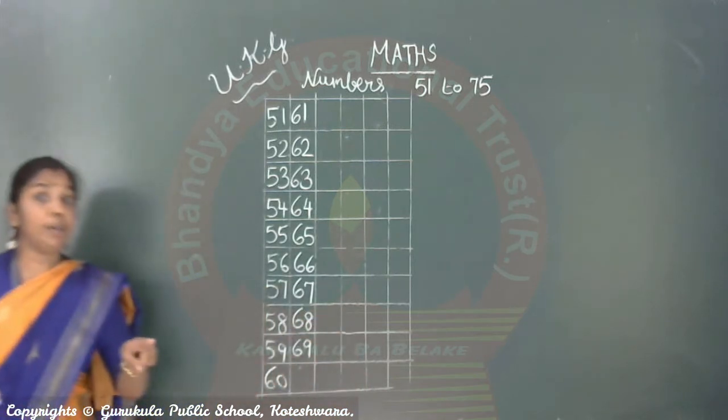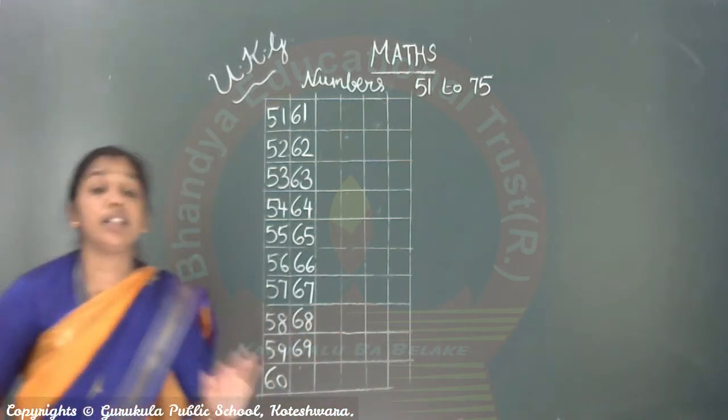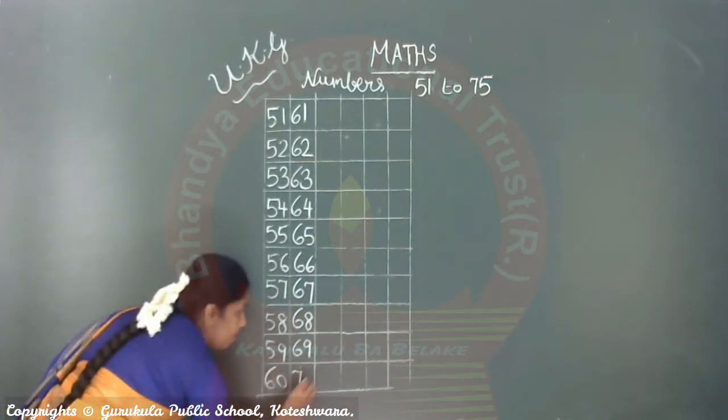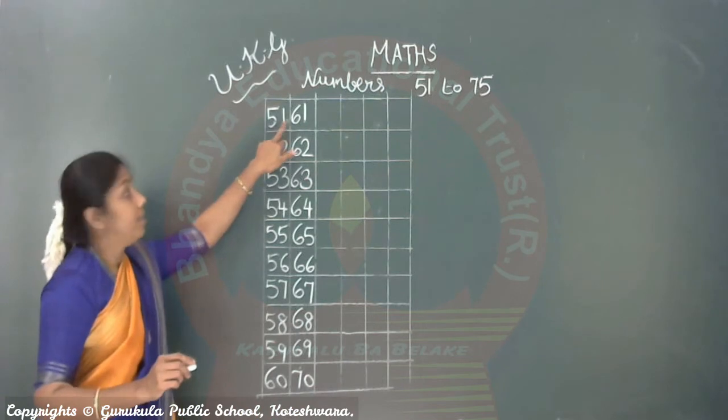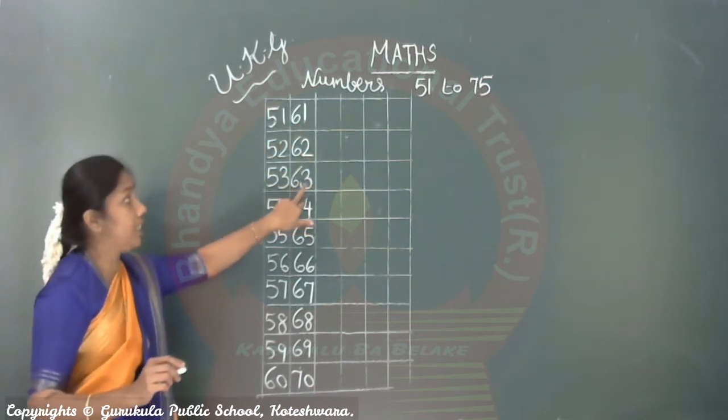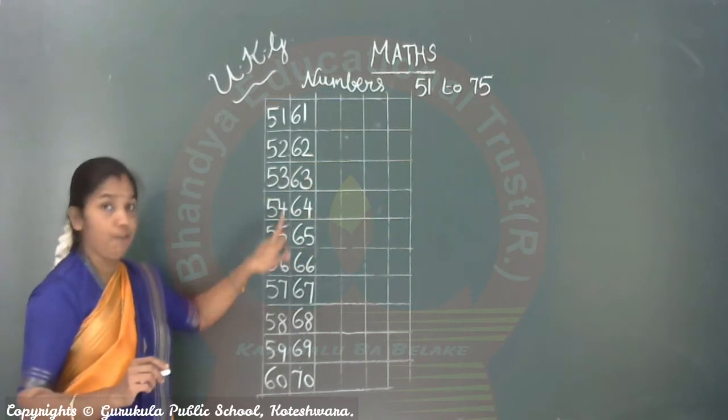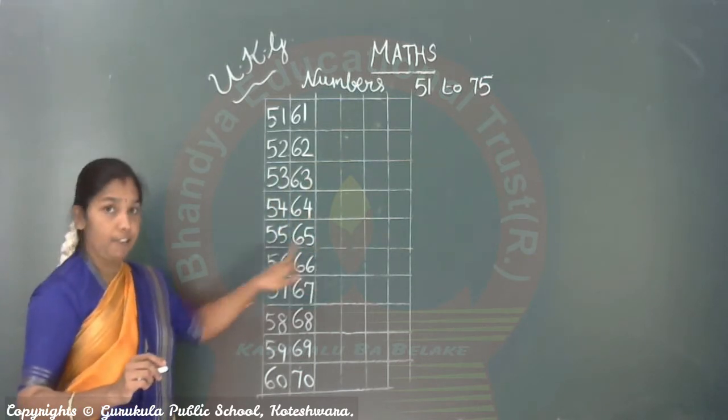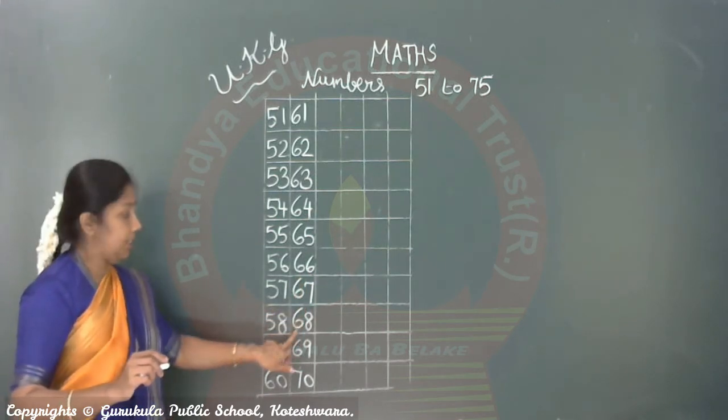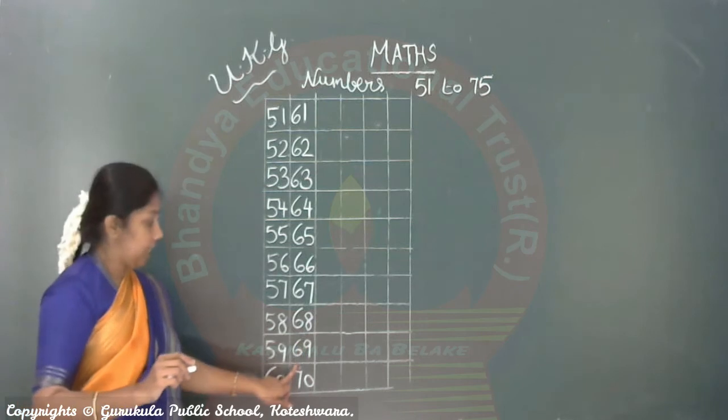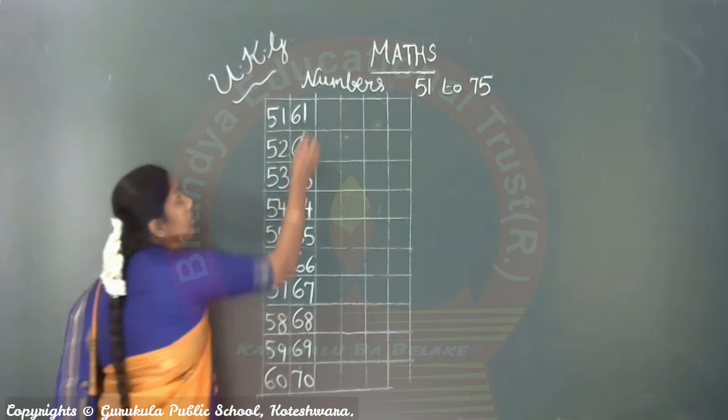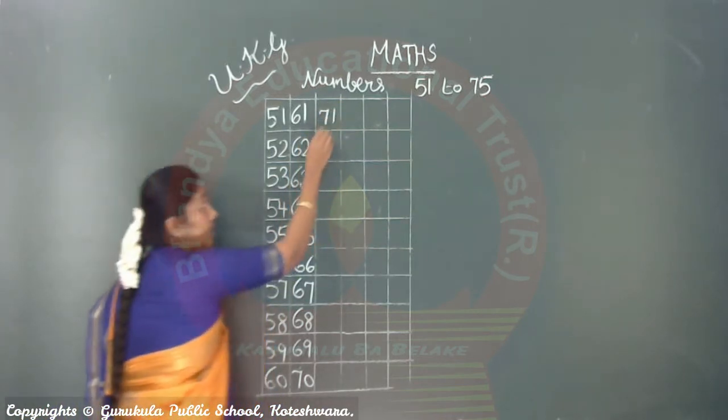69 after? 7, 0, 70. Which is the number? 7, 0, 70. Okay. 6, 1, 61. 6, 2, 62. 6, 3, 63. 6, 4, 64. 6, 5, 65. 6, 6, 66. 6, 7, 67. 6, 8, 68. 6, 9, 69. 7, 0, 70. 7, 0, 70.